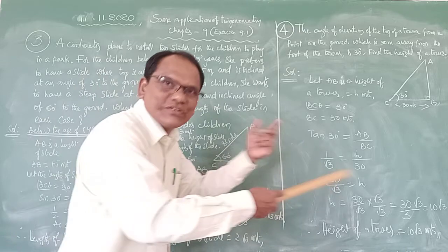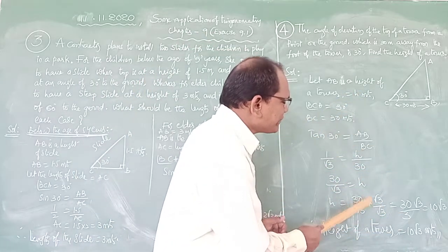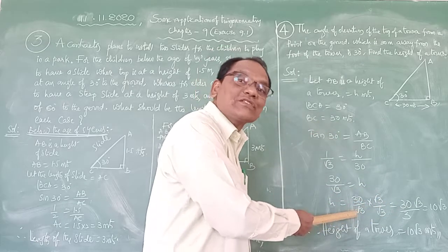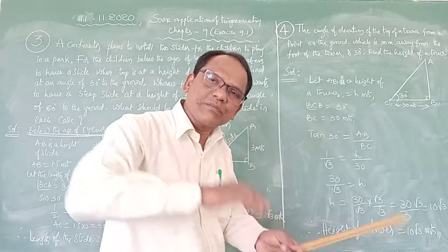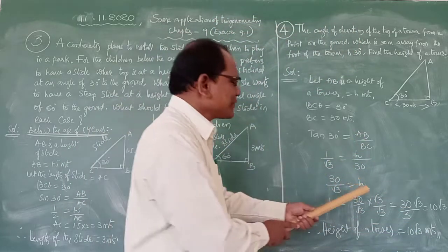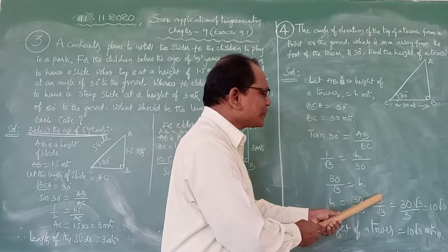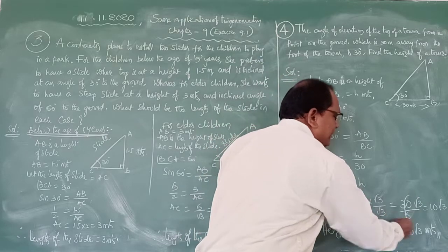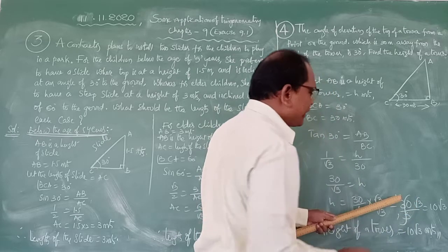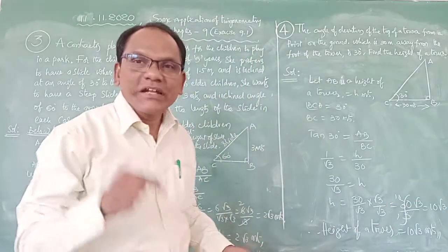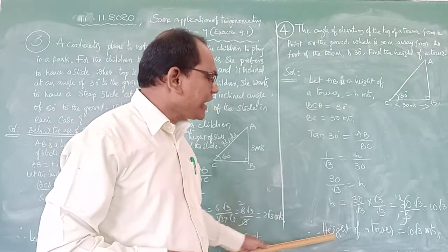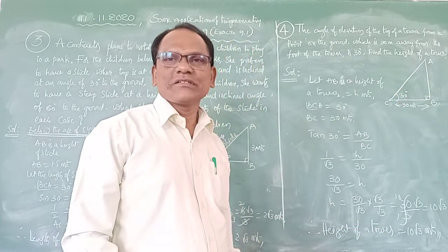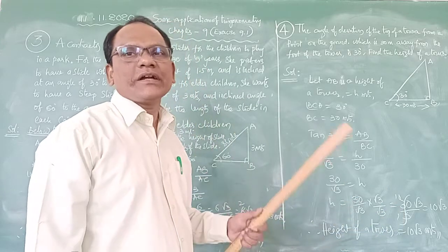To rationalize 30/√3, we multiply numerator and denominator by √3: (30 × √3) / (√3 × √3) = 30√3 / 3 = 10√3 meters. Therefore the height of the tower is 10√3 meters.